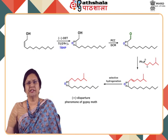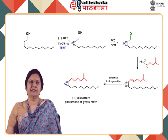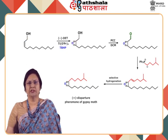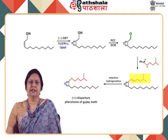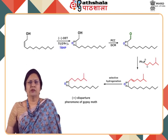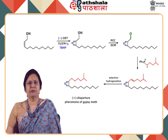The sex pheromone of the gypsy moth, (+)-disparlure, was synthesized in good enantiopurity by using Sharpless epoxidation followed by Wittig reaction and selective hydrogenation. Starting from an allyl alcohol, the epoxide is formed, then PCC oxidizes the primary alcohol to an aldehyde, and the Wittig reaction introduces an alkyl chain with a double bond in place of the carbonyl. Finally, selective hydrogenation reduces the double bond to a single bond, completing the synthesis of this pheromone.